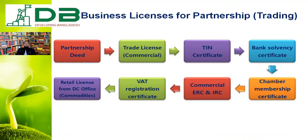For partnership business licenses in the trading sector, you need a partnership deed, trade license, TIN certificate, bank solvency certificate, chamber membership certificate, commercial ERC or IRC, VAT registration, and a retail license from the DC office. These eight certifications or licenses are required for a partnership business in the trading sector.